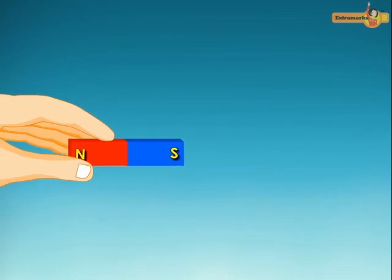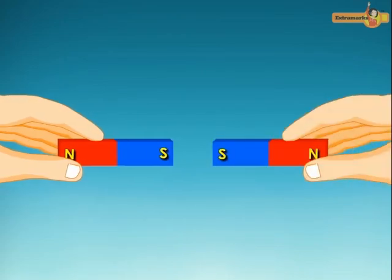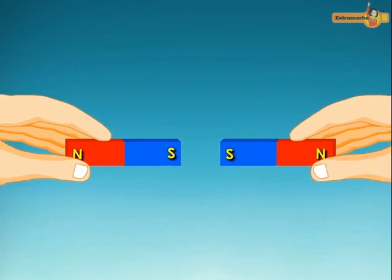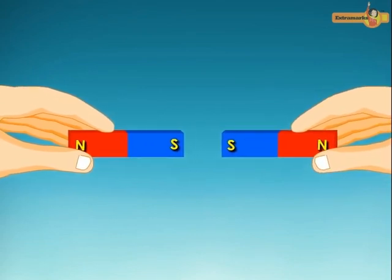Similarly, on bringing the South Pole of one magnet close to the South Pole of another magnet, the two poles again repel each other.